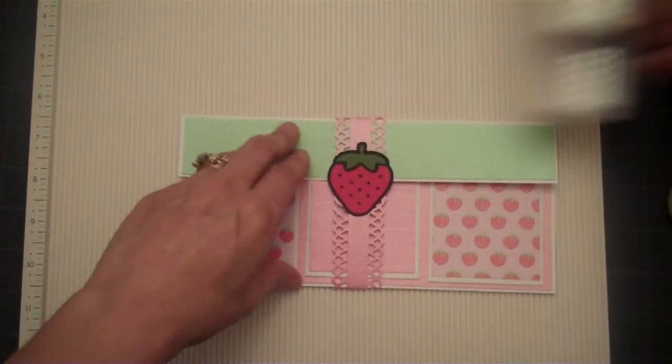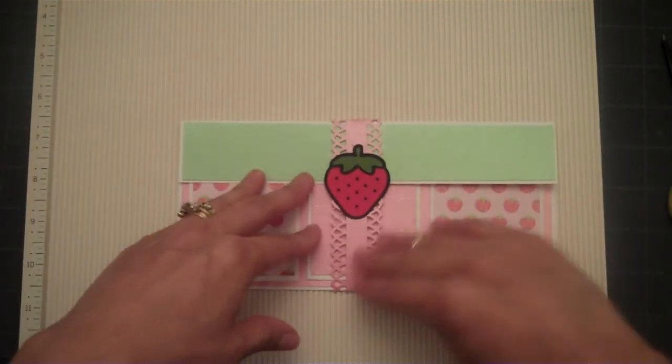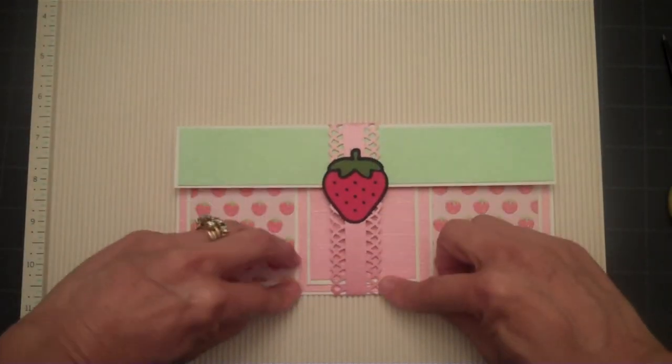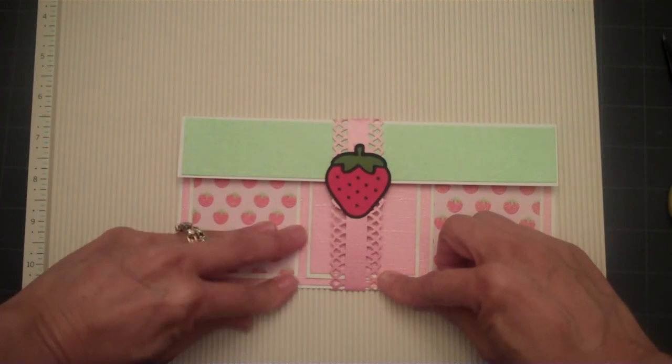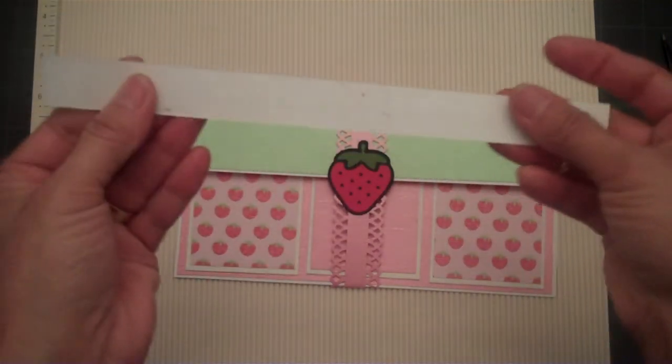So just play around with it and then you can kind of measure how your punches are going to work for doing a belly band. If you don't want to do a scalloped edge on the belly band, just do a regular cut like this.